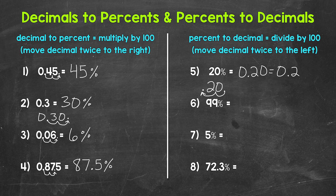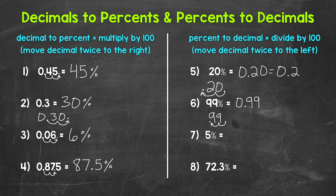Let's move on to number six, where we have 99%. Let's rewrite this with a decimal, then divide by 100 by moving the decimal once, twice to the left. We end up with 0.99 — 99 hundredths. So 99% equals 99 hundredths.